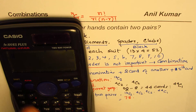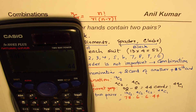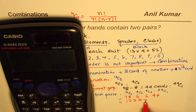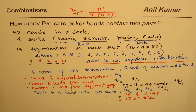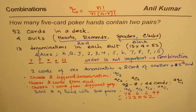So we have 4C2 = 6, times 6, times 44. The product of 44 × 6 × 6 × 78 gives us 123,552. That is the number of five card poker hands which contain two pairs.